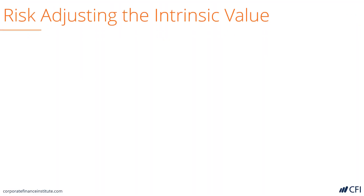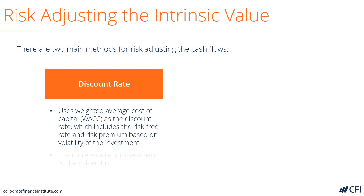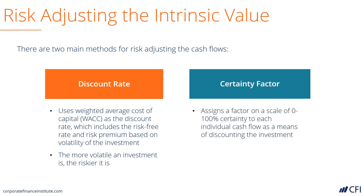But first, let's look at how risk adjusting the intrinsic value works. There are two methods. One is with a discount rate, which represents the opportunity cost of capital or a risk measure for the riskiness of those cash flows. The more volatile an investment is, the riskier it is, and therefore the higher the discount rate is. Another method to use is a certainty factor, where an investor assigns a probability of receiving the cash flow in each period to risk adjust it.